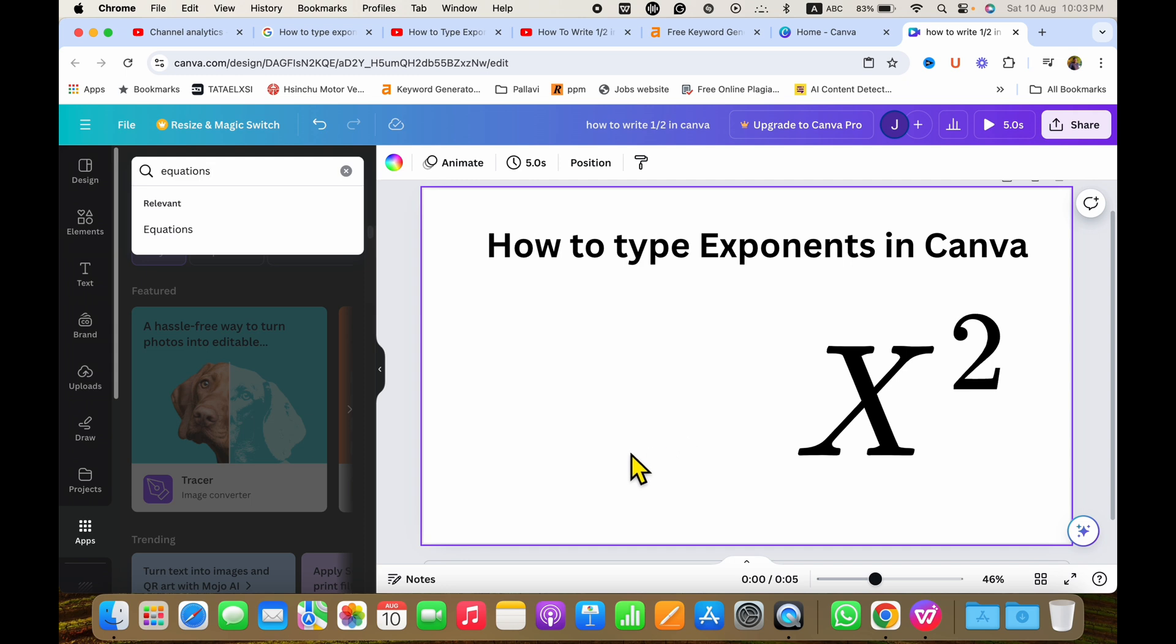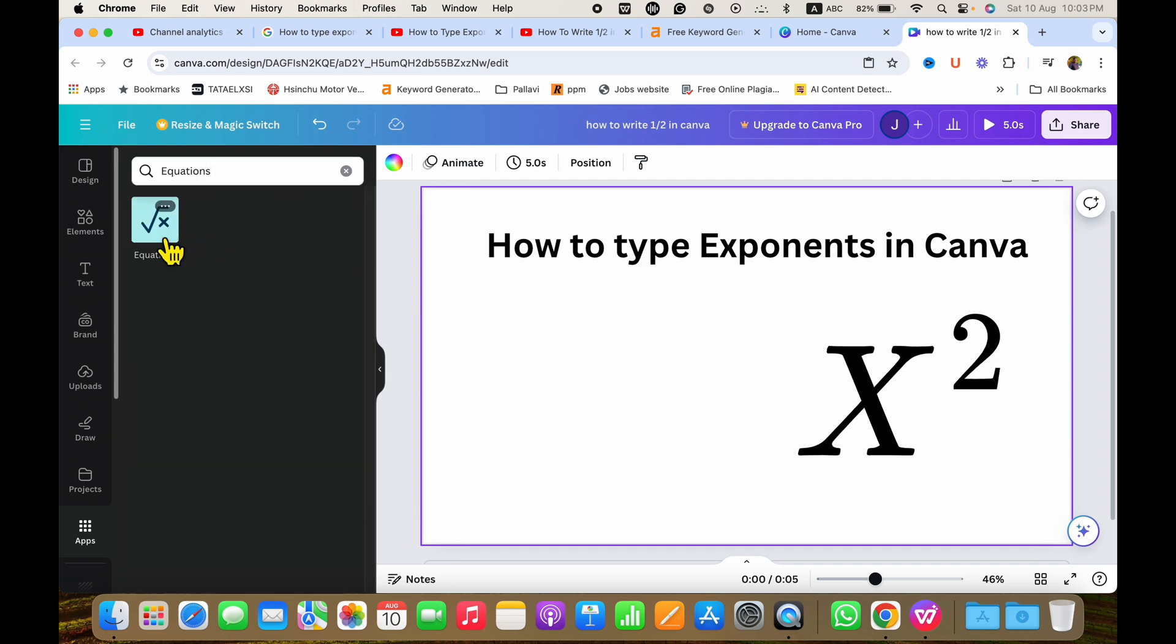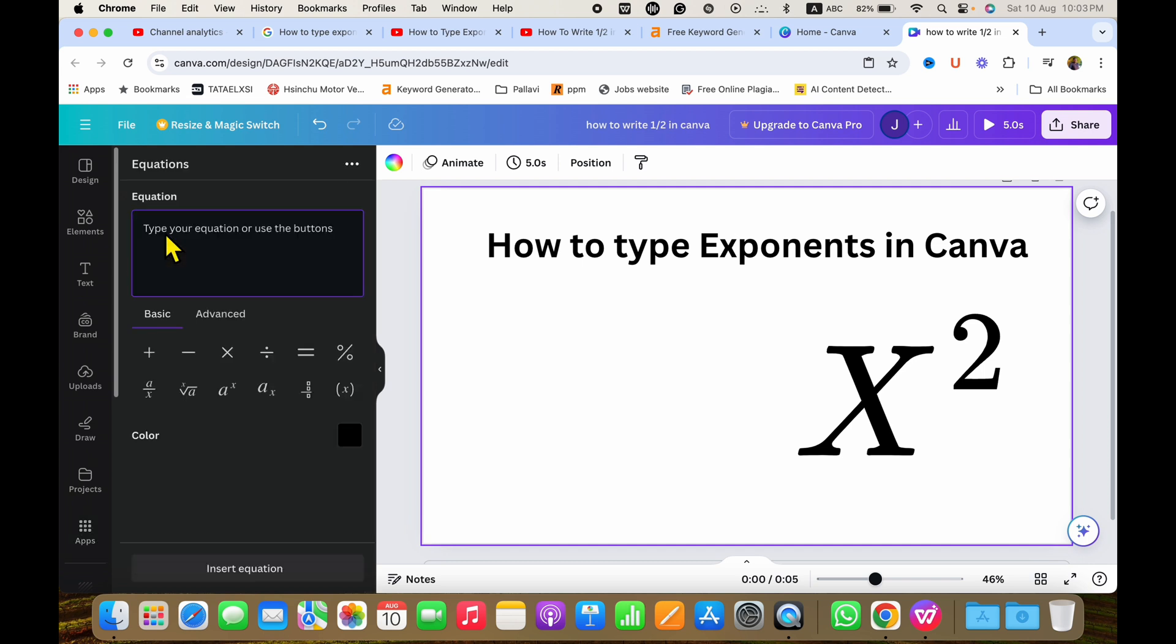After typing equations, just click on this option and you will see this icon. You need to click on the icon and you will see this equation box.